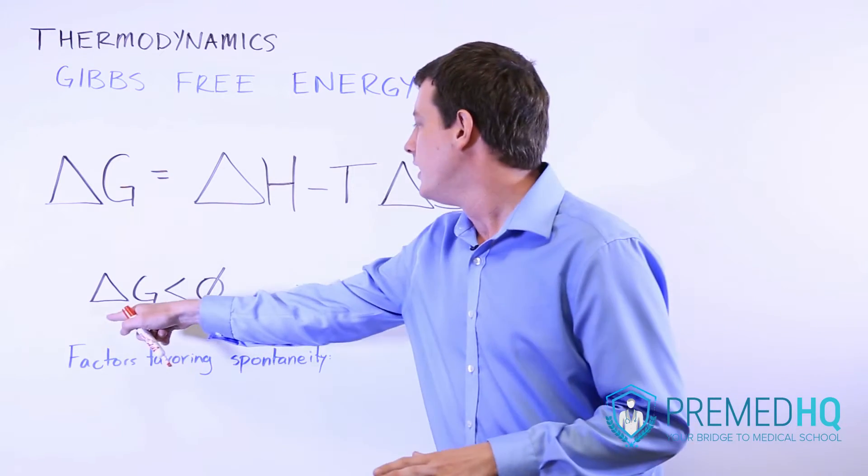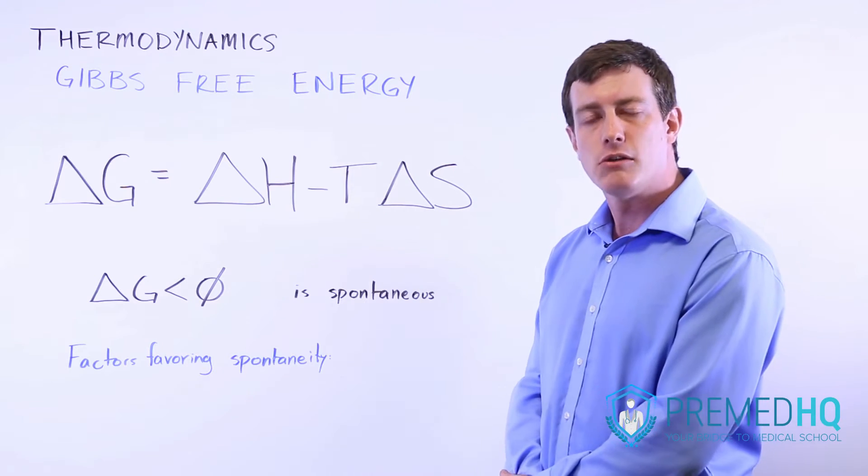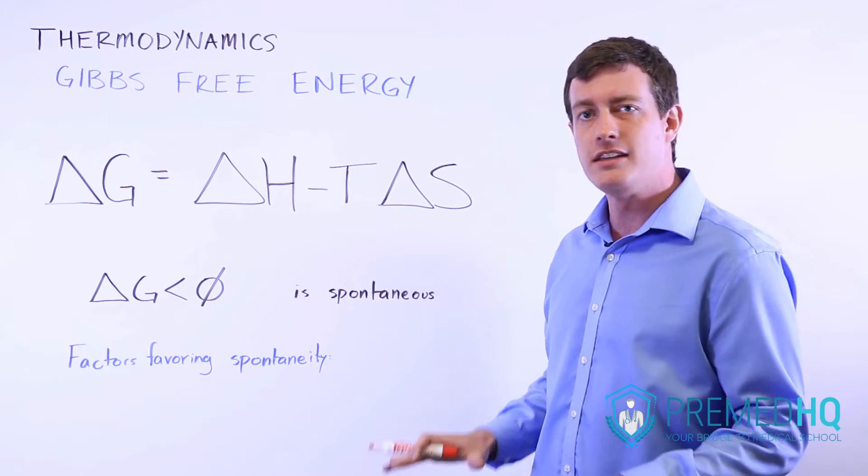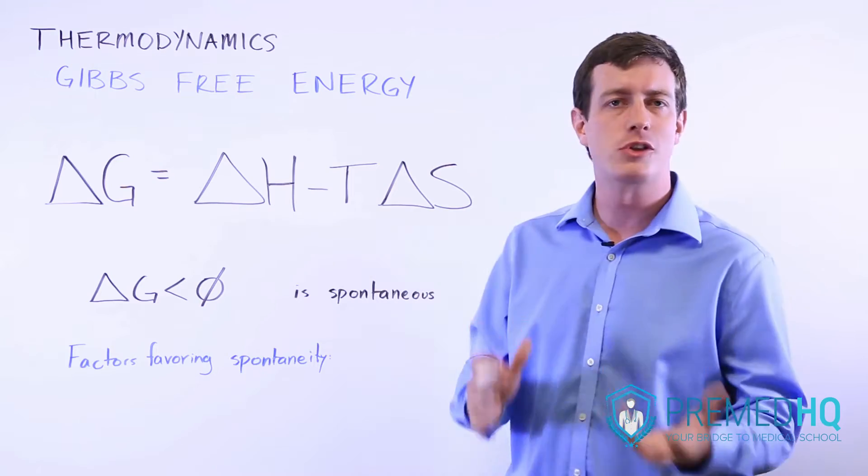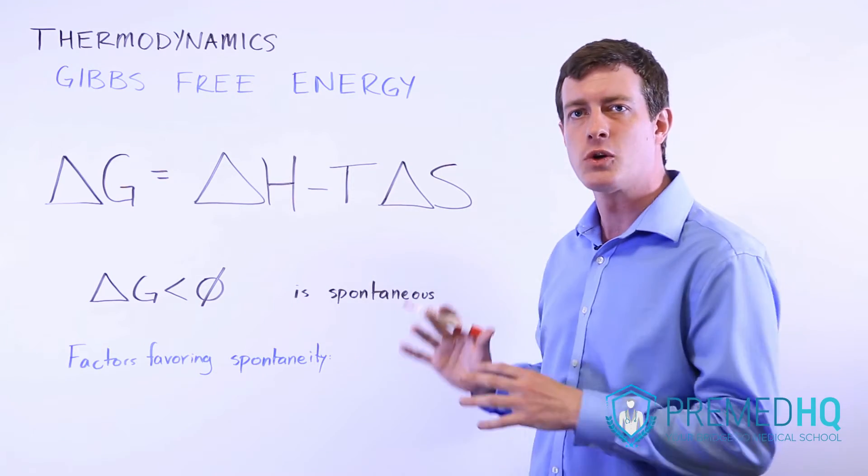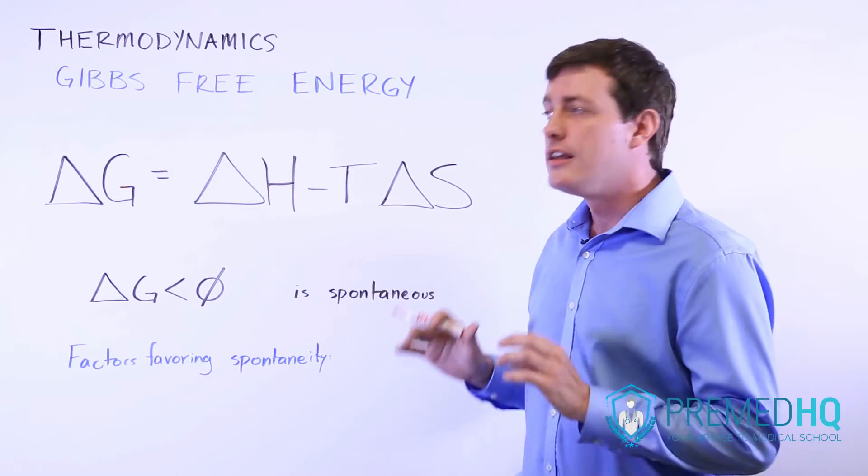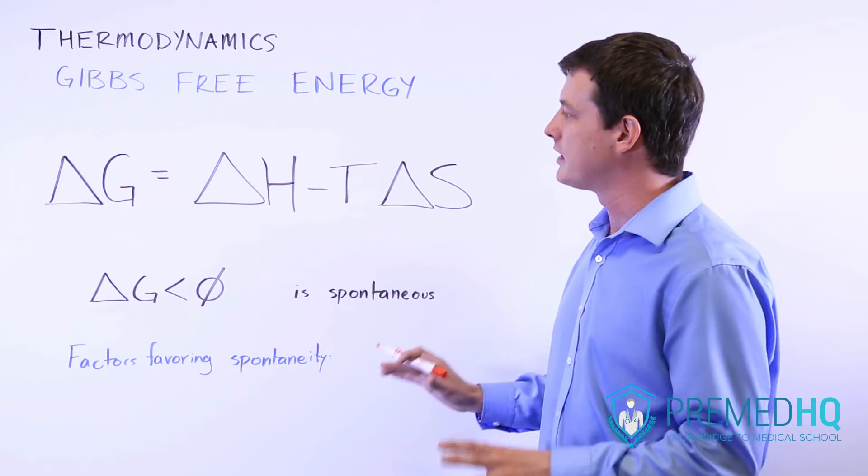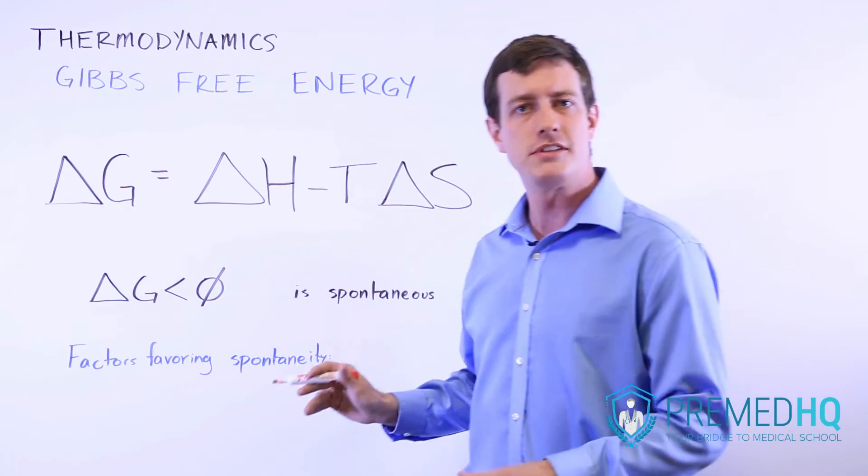If you have a negative change in the Gibbs free energy, then your reaction will be spontaneous. And this is more valuable than when people say that an exothermic reaction is spontaneous or that a reaction that increases entropy is spontaneous. The gold standard of whether something is spontaneous or not is whether it has a positive or negative delta G.